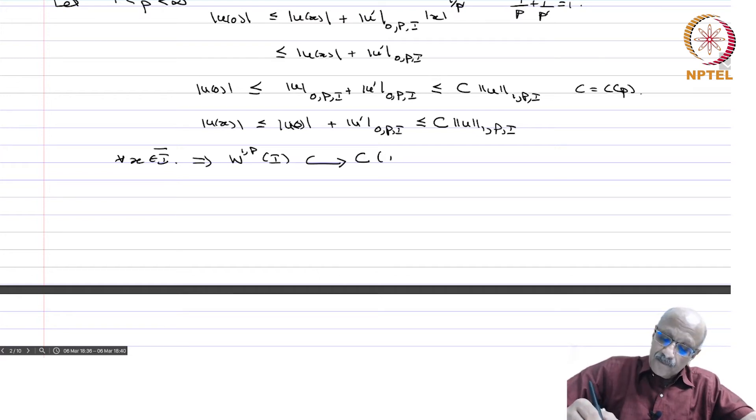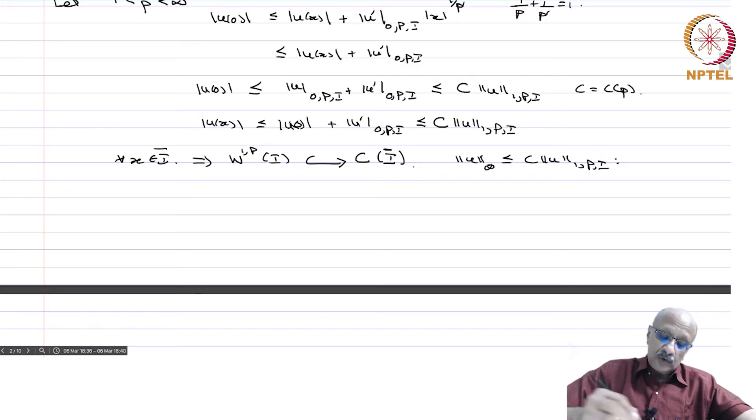We have proved that W^{1,p}(I) is continuously embedded in C(I̅), namely every function is absolutely continuous, therefore continuous, and the norm in here, namely the L^∞ norm, ||u||_{∞} is less than or equal to c times ||u||_{W^{1,p}(I)}. This is what we have shown.